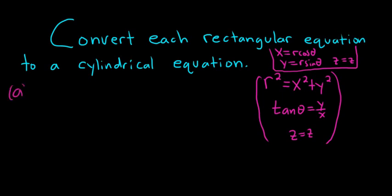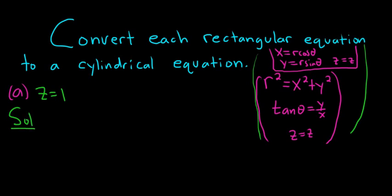Part a. Let's do the first problem. We have z equals 1. This is a rectangular equation, so we have to convert it to cylindrical. Well, z is equal to z, so it stays the same. So z equals 1 — nothing to do there.